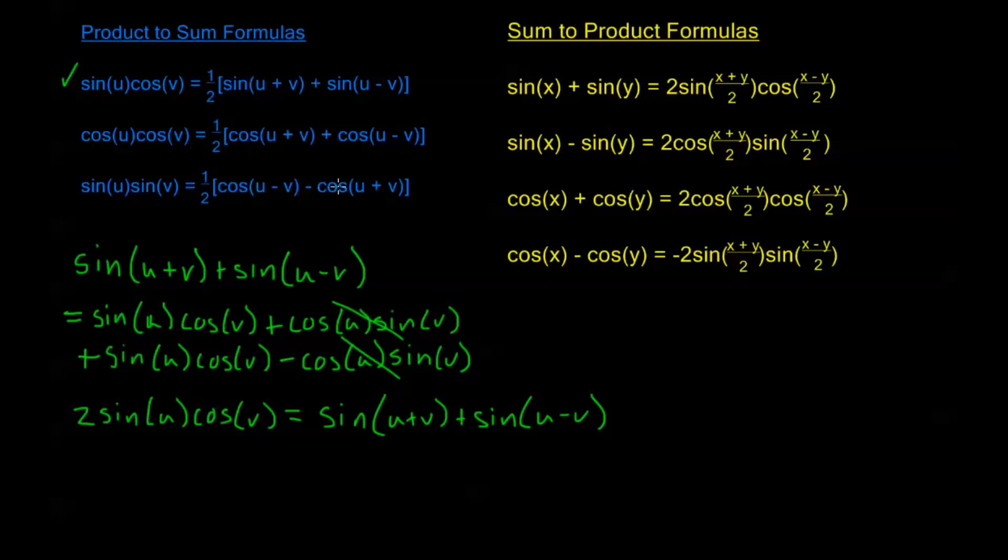And so we see we just divide both sides by 2, and we get exactly our first product-to-sum formula. Now, for the next two, if you want to prove this second formula, we just work out cosine of u plus v plus cosine u minus v. And for the third formula, we just work out cosine of u minus v minus cosine of u plus v. All right, and those are our product-to-sums.